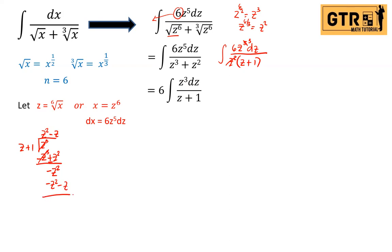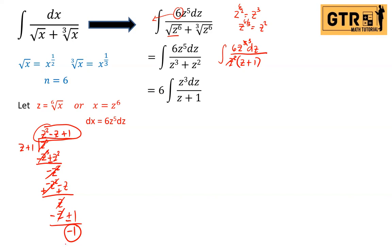Continuing: positive z divided by z gives positive one. Multiply one by (z plus one) to get z plus one; subtracting leaves a remainder of negative one. So the result of the long division is z squared minus z plus one, remainder negative one. Therefore z cubed over (z plus one) equals z squared minus z plus one minus one over (z plus one).